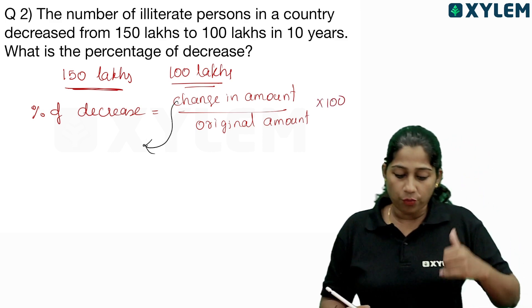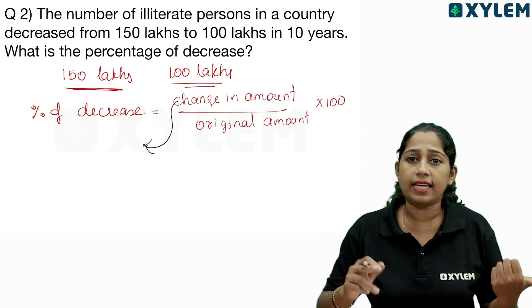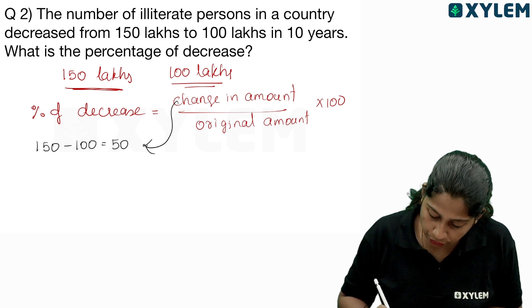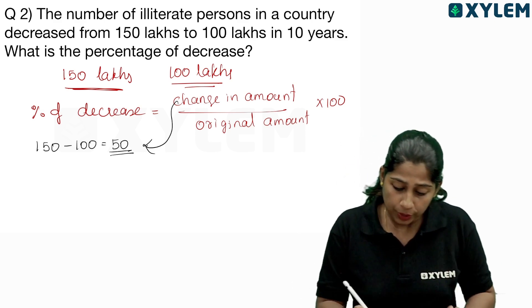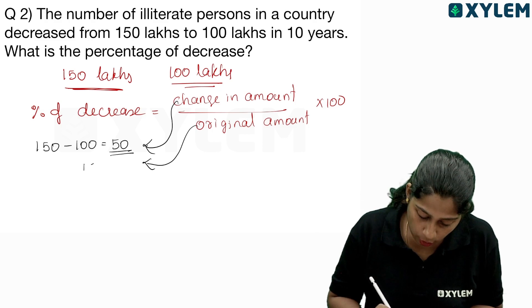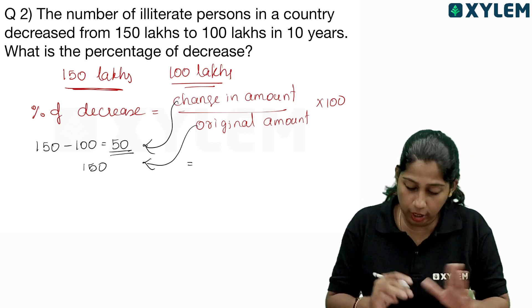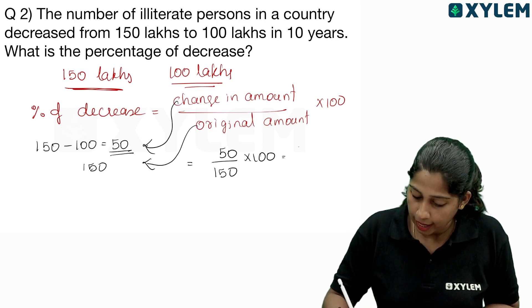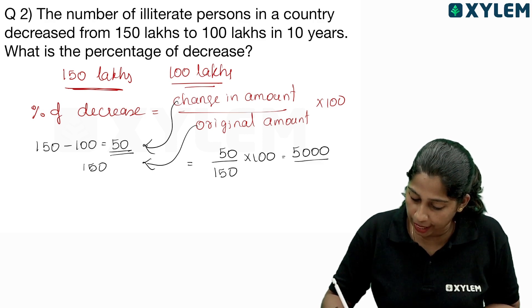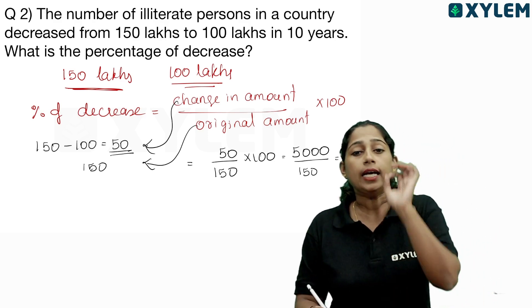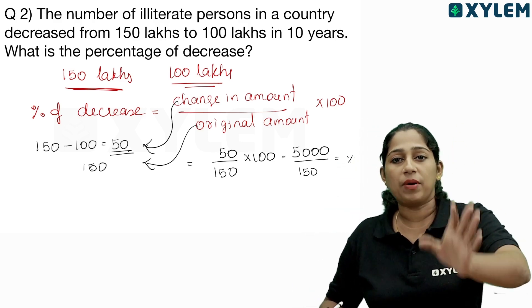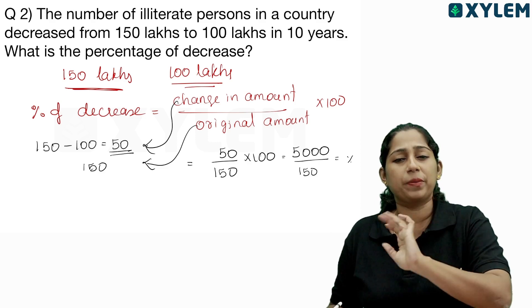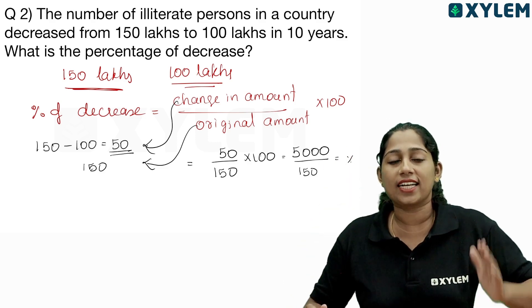How much change in amount? From 150 lakhs to 100 lakhs. Change in amount is 150 minus 100, which equals 50. The original amount is 150 lakhs. If you have a question or a decimal or fractional value answer, you can post it in the comment box.